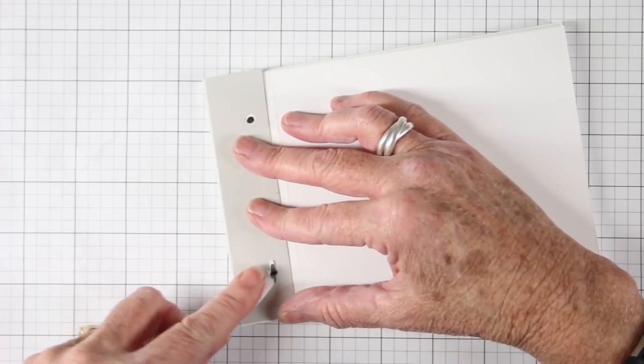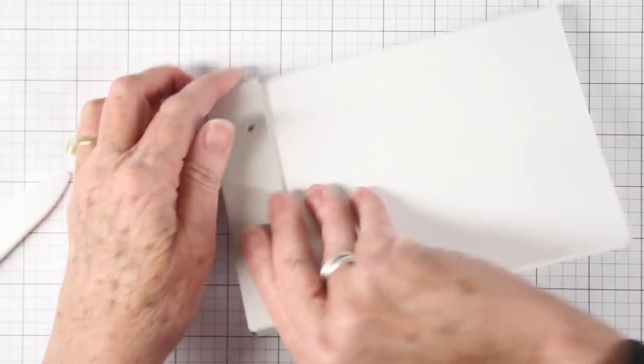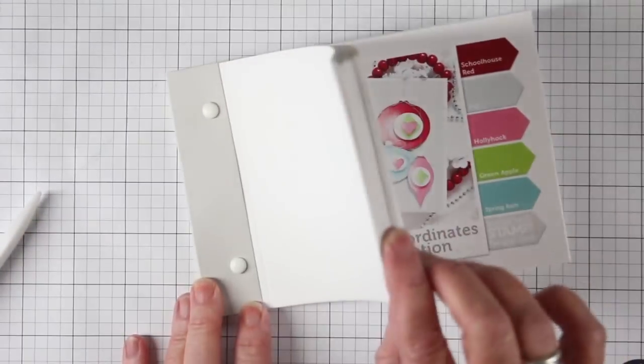If you wanted to dress your book up you could string some twine or ribbons through and tie them in a bow in the front. And once you have your book bound it's ready for some decorating.